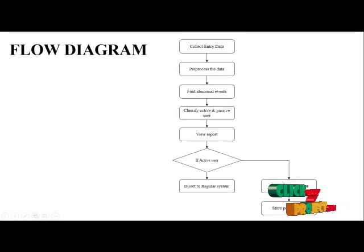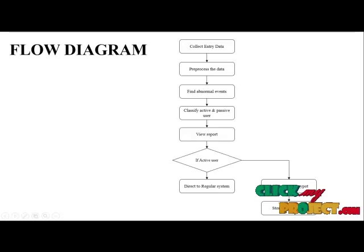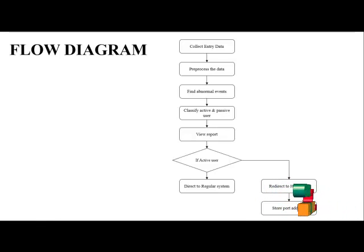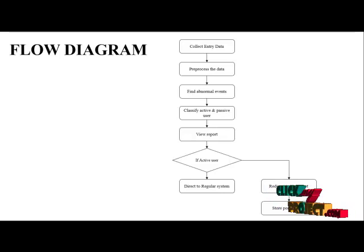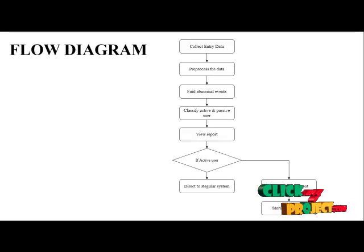This is our project flow diagram. First, we collect the entry data submitted by the user. Then we pre-process the data, clearing any errors or irrelevant data from the dataset. After pre-processing is completed, we find abnormal events derived from the whole dataset. We then classify the abnormal events from the normal events, and classify active and passive users using game theory.